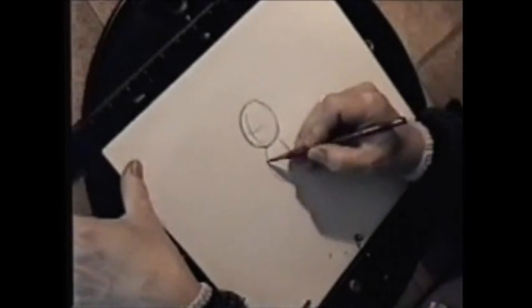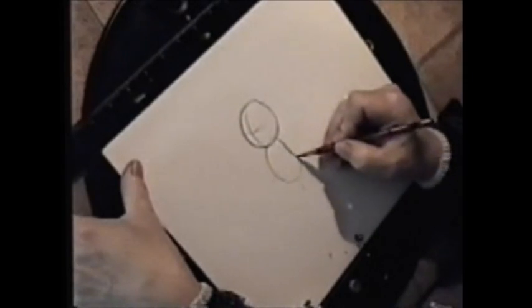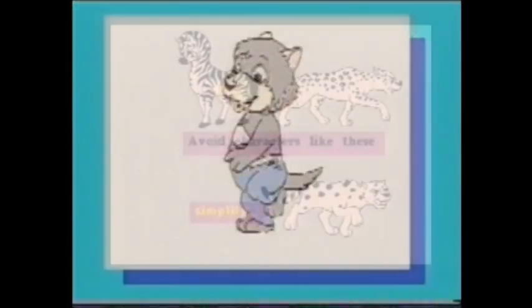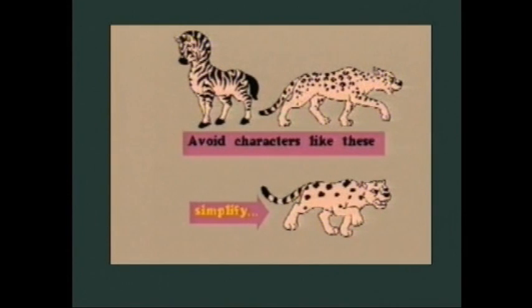These shapes are used when roughing out your animation. Details are not added yet. It is easier to redraw a rough character than a detailed drawing. Only once you are satisfied with the action can you start adding the details.